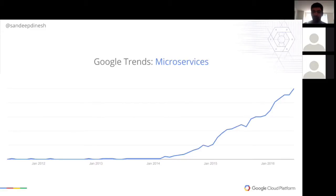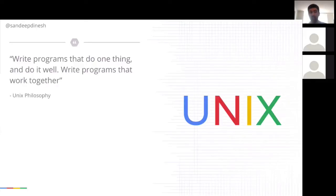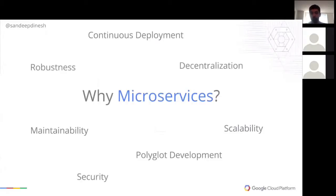I need to update this for 2017 — I'm assuming it's going to be even higher — and for good reasons. If you don't know what a microservice is, it's basically taking the Unix philosophy and bringing it to your application: you write a program that does one thing and does it well, and that works well with other programs. Instead of writing a really big application that does all the functionality, you break it down into small functional blocks, and then these blocks talk to each other. There are many reasons you'd want to go to a microservices stack — continuous deployment, decentralization, scalability, and every team can own their own service.